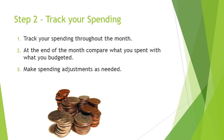Step two is you track your spending. As I mentioned at the beginning, that is an integral part of budgeting because this is how you maintain your budget. How do you know how accurate your budget is unless you track what you spend and see how it compares? Throughout the month, you want to track what you're spending and note what category that money falls in. At the end of the month, compare what you spent with what you budgeted, and make spending adjustments as needed.